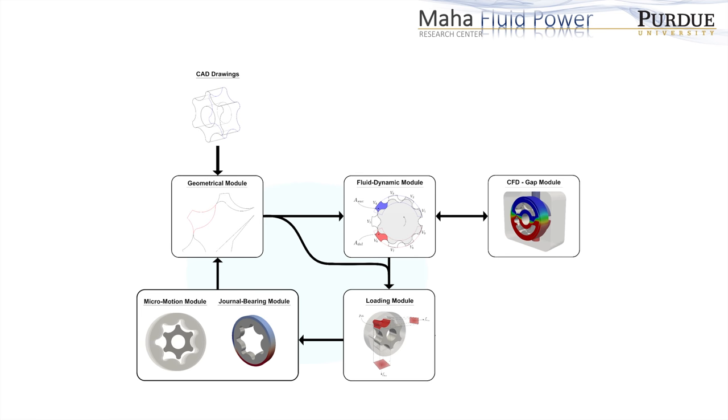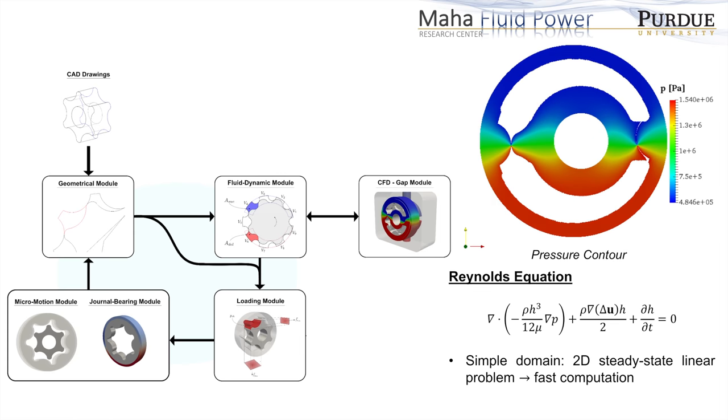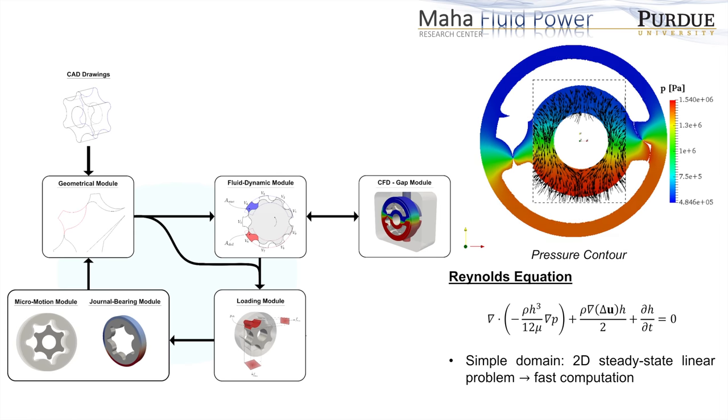The lubricated interfaces are modeled using an accurate two-dimensional CFD model. To describe flow and friction in this interface, the Reynolds equation is solved, and data are passed back to the fluid dynamic and mechanical models in an offline fashion.